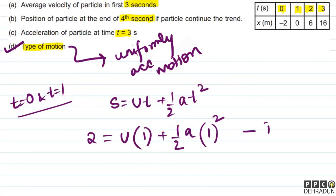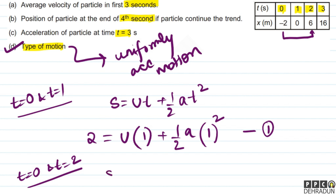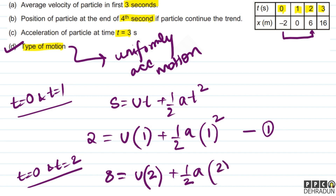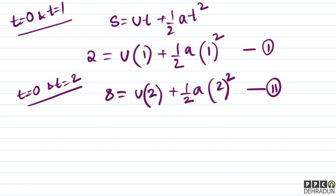For the second equation, we look at the interval from t=0 to t=2. The displacement is: it went from -2 to 6, so displacement = 8. This gives us: 8 = u(2) + ½a(2)², which is our second equation.